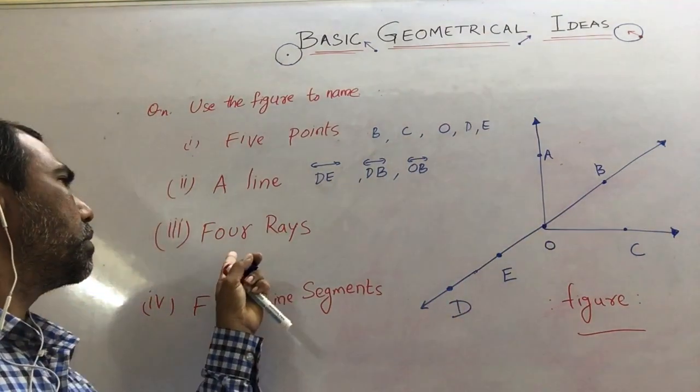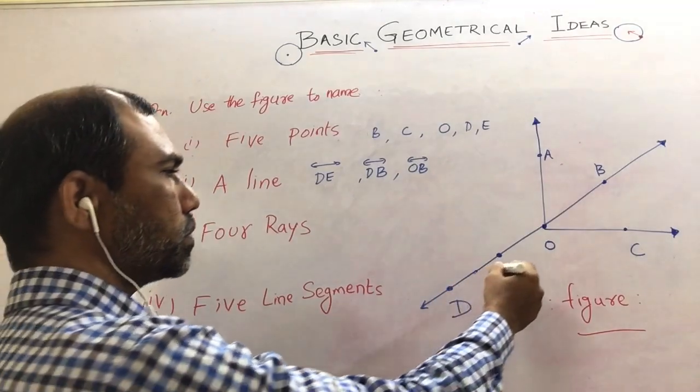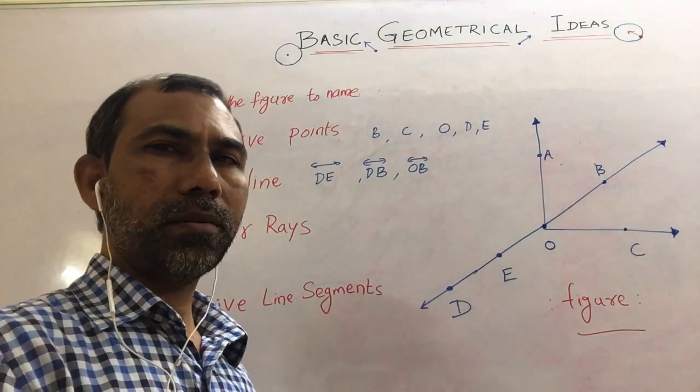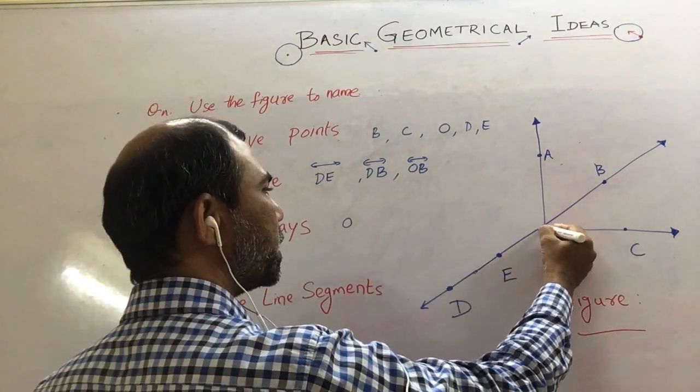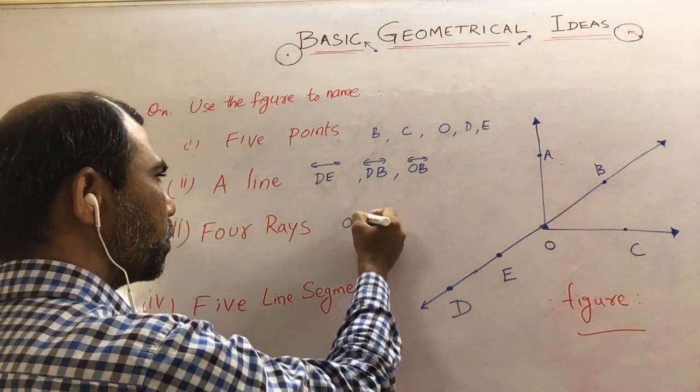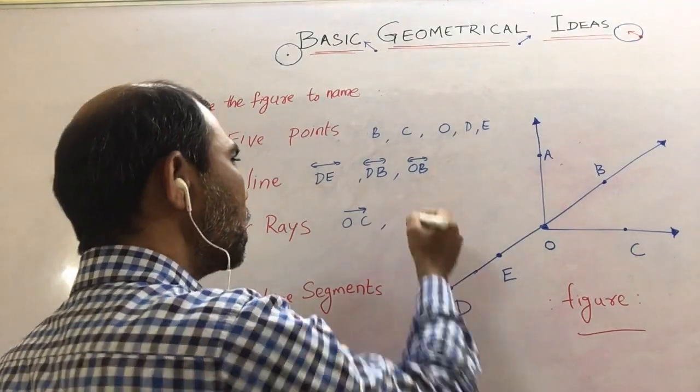Now, the question for four rays, the answer will be one initial point and any point on the line. You can assume it as, you can see here O is initial point here and C on the other side it is extending. So OC can be an answer.